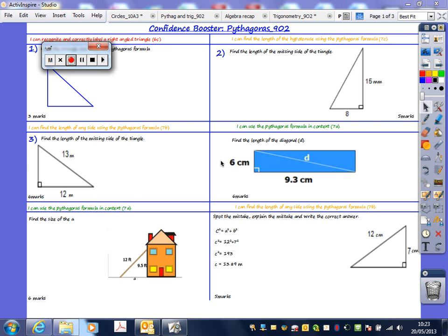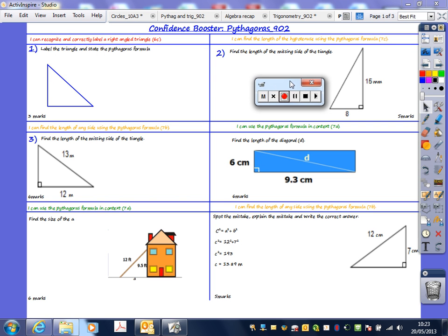First question: I can recognize and correctly label a right angle triangle. To get the full three marks we need to label the triangle correctly. So what side is this here, Dylan? The hypotenuse. That's C, the hypotenuse. And this is what? Dylan, finish it off for me. That's all it needs to do, is label the triangle. State the formula. Finish off for me, what is it? C squared is equal to A squared plus B squared, C being the hypotenuse.